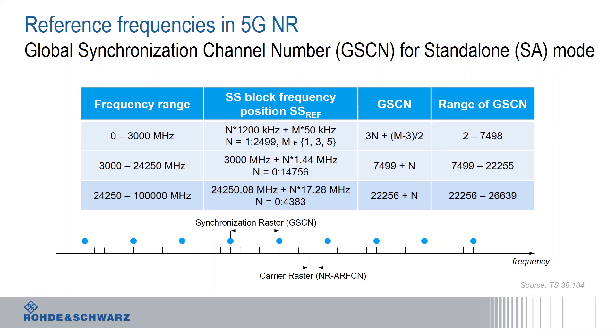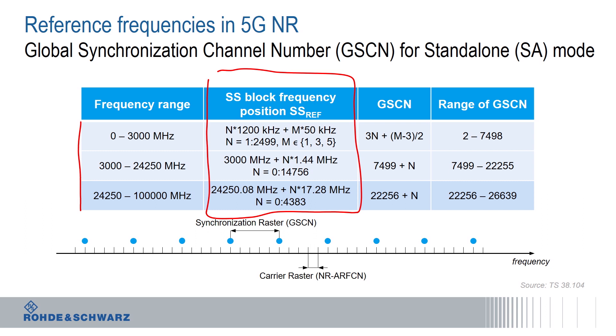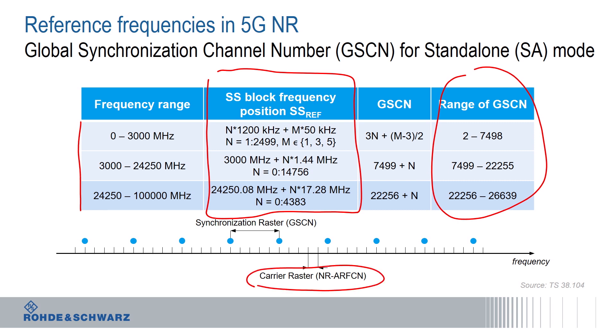The global synchronization channel numbers are defined differently. It's a different table with a certain definition in terms of the raster. As you can see, different factors go in again, similar to NR-ARFCN, covering three frequency ranges and providing a different number set. What you can already see is that the actual carrier raster is much more granular than the actual synchronization raster. This is a compromise — a trade-off added into the standard so that the mobile, if it has to sweep the spectrum, which it must do in standalone mode, doesn't waste too much time finding these synchronization signals. So in standalone mode, SSBs follow the synchronization raster at a much wider granularity than is possible with non-standalone mode.